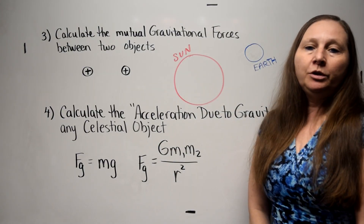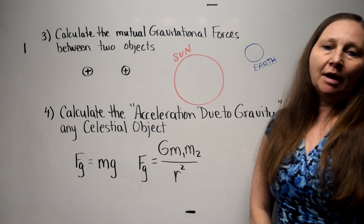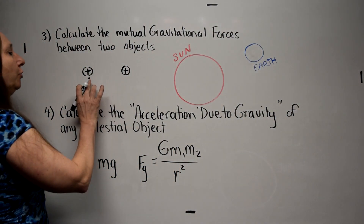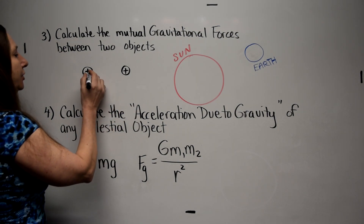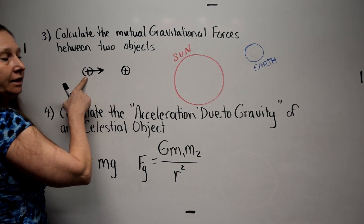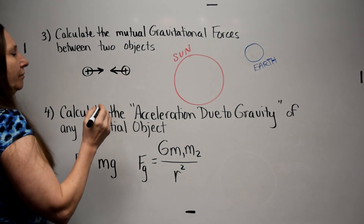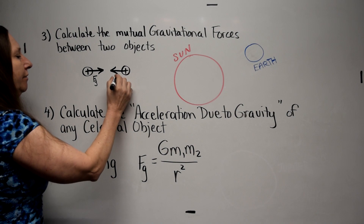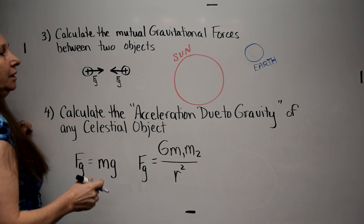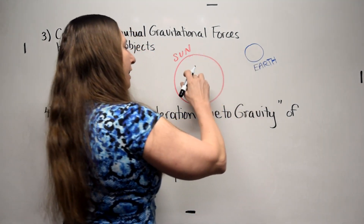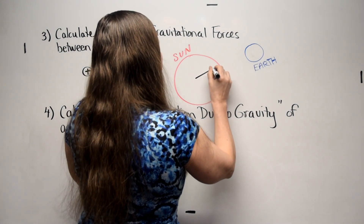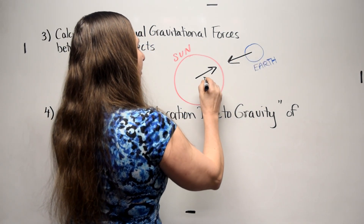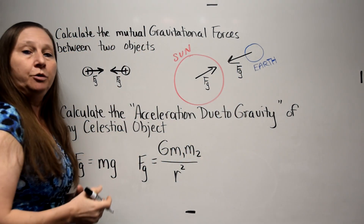One of the things we can do with the universal law of gravitation is calculate the mutual gravitational force between any two objects or samples of matter. For example, we know that two protons are going to attract each other gravitationally — this proton attracts that one, and that proton attracts this one. We can calculate the magnitude of those gravitational forces. Similarly, we know that the Sun attracts the Earth and the Earth attracts the Sun, and those two forces should be exactly the same magnitude.